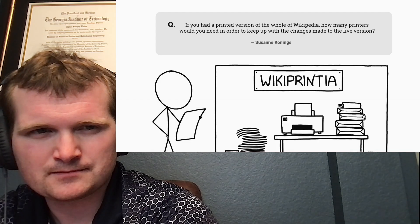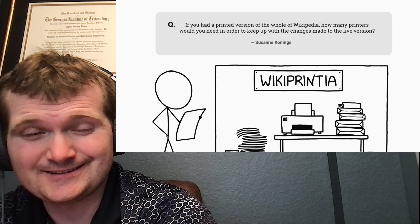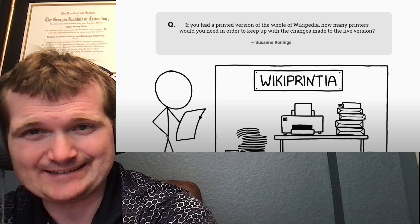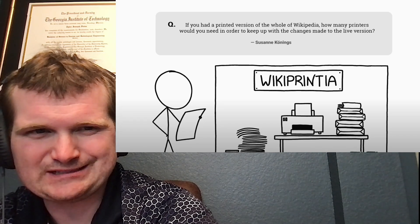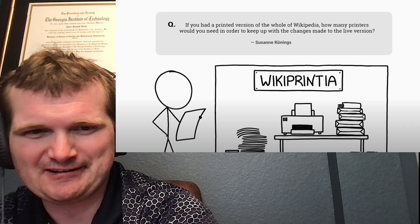This question comes from Suzanne, who asks, if you had a printed version of the whole of Wikipedia, how many printers would you need in order to keep up with the changes made to the live version? So something that's constantly changing. Why? So not only is it large, but it's constantly changing and evolving.